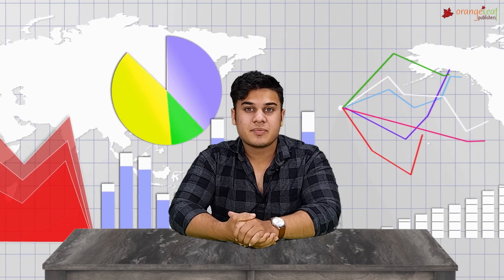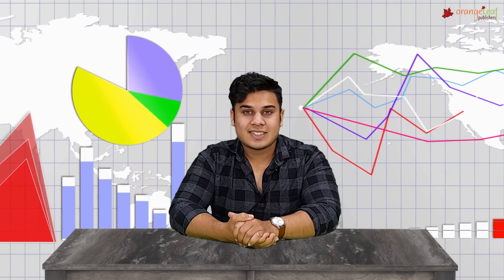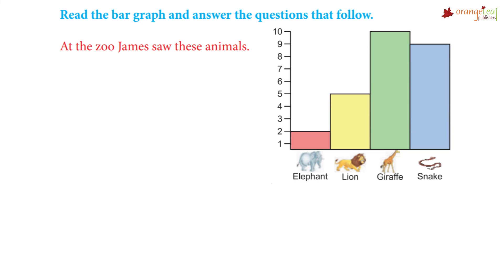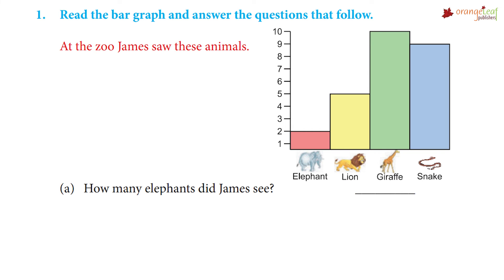Now I hope you understood bar graphs. Let's test it with an exercise. Have a look at this example — at the zoo, James saw these animals. Here is the bar graph of what he saw. How many elephants did James see? He saw two elephants.